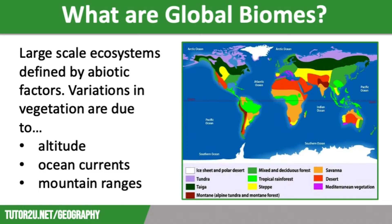Variations in vegetation are due to distance from the sea, ocean currents, winds, geology, soils, altitude and relief. For example, with altitude, temperatures will fall with height above sea level.